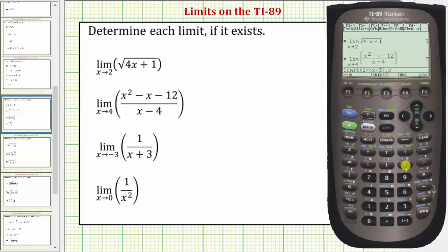Comma, the variable x, comma, x is approaching negative three, so we enter negative three, close parenthesis, and enter.